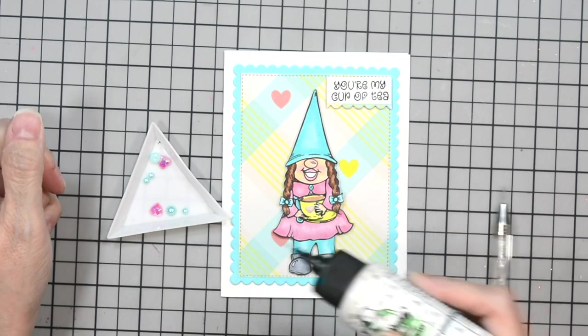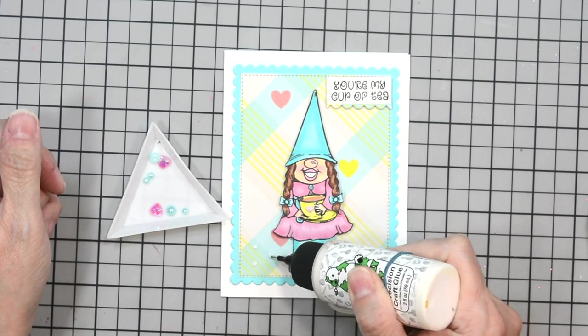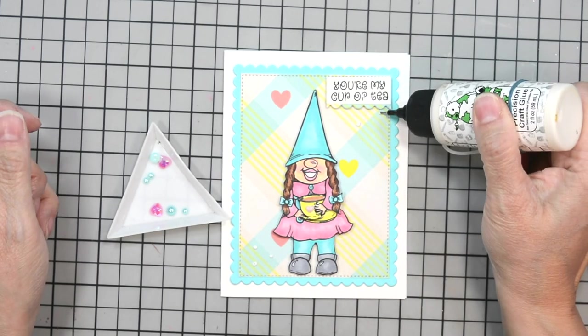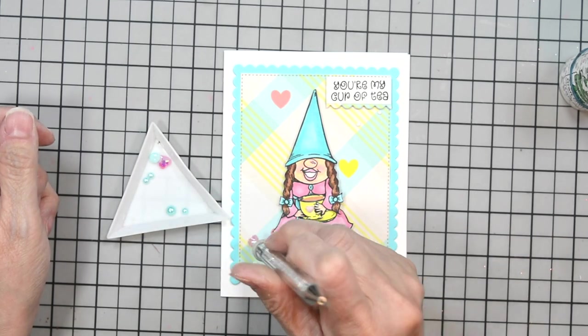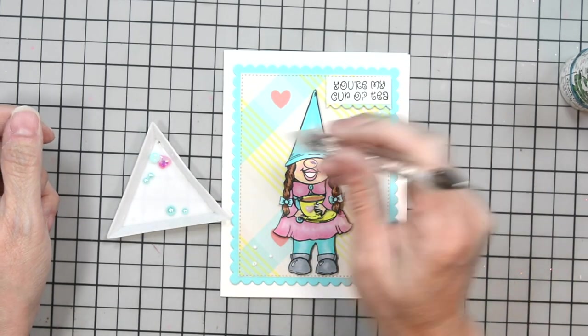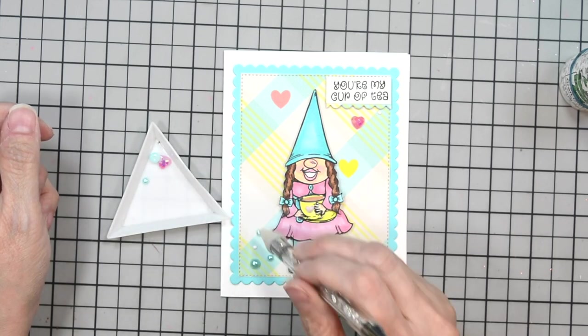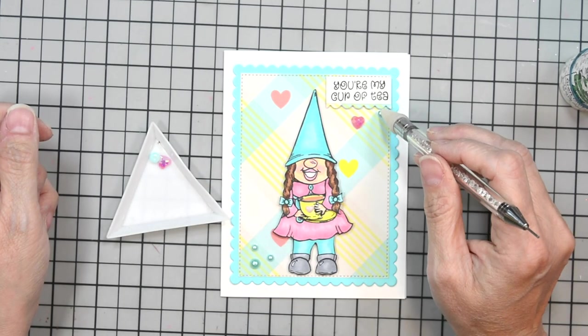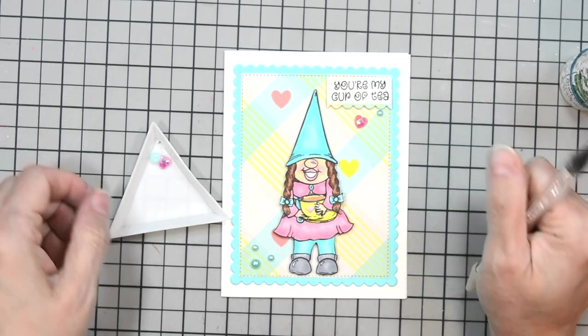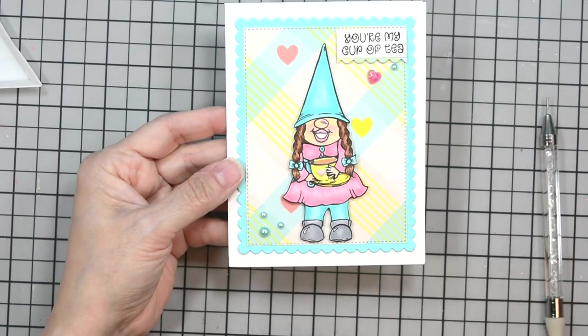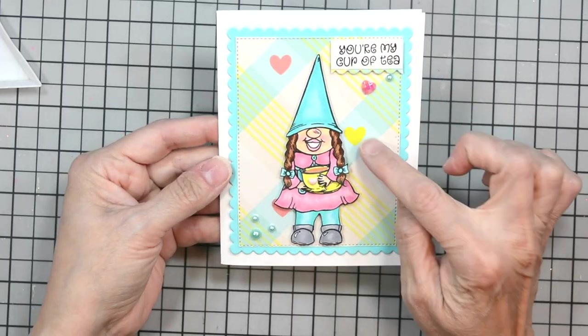Now I'm going to bring in some blue pearls and a pink heart to decorate our little gnome and card. On her teacup, instead of stamping any of those little images that came on the stamps, I went ahead and adhered a pale yellow heart. Now I'm adding all the rest of our embellishments and now our card is complete.